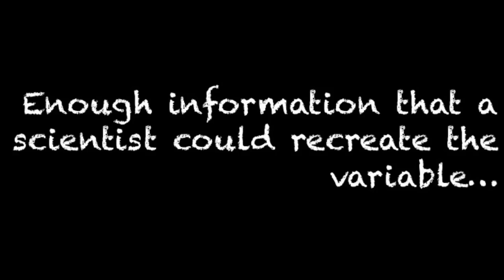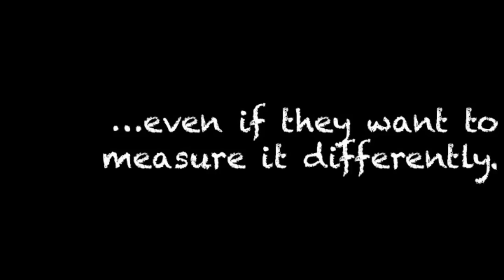Operational definitions need to have enough information in them that another scientist could recreate our variable, but they also shouldn't have too much information. This is because another scientist might like the variable we selected, but not like exactly how we measured it. Operational definitions need to have enough information that another scientist could recreate the variable, even though they might change how it was measured.